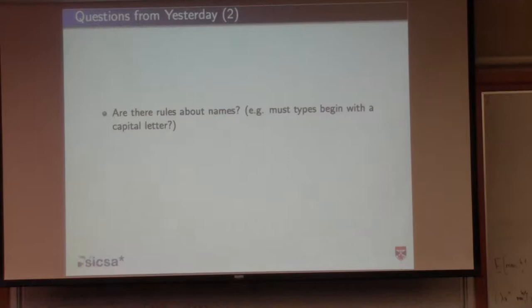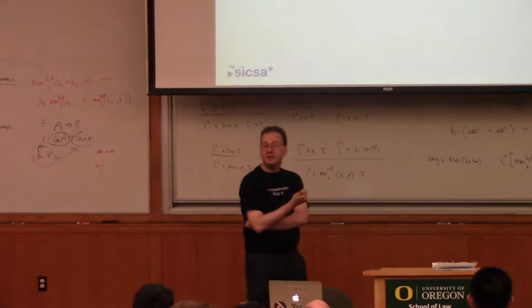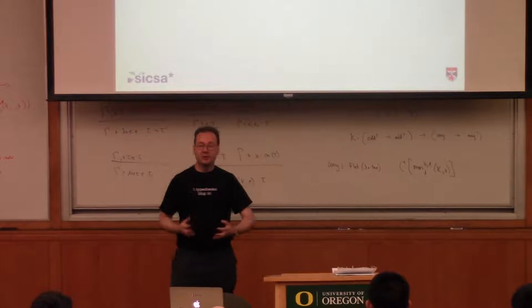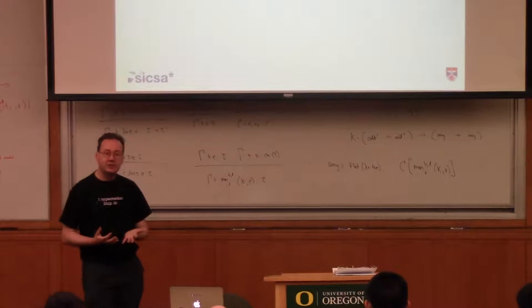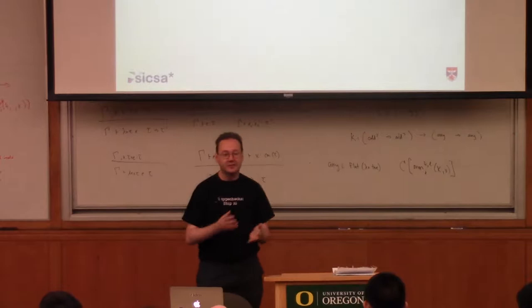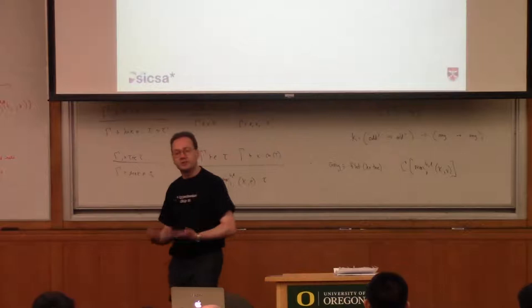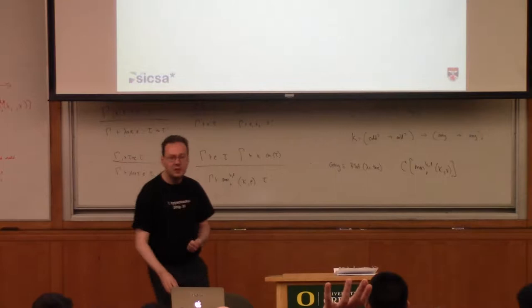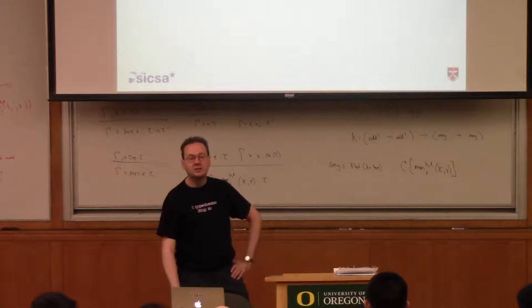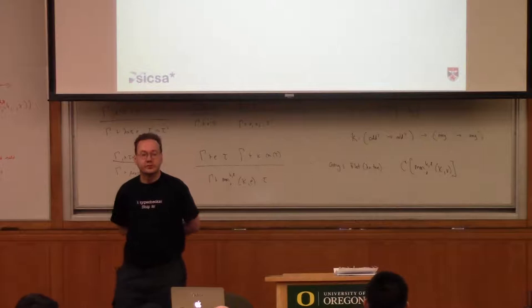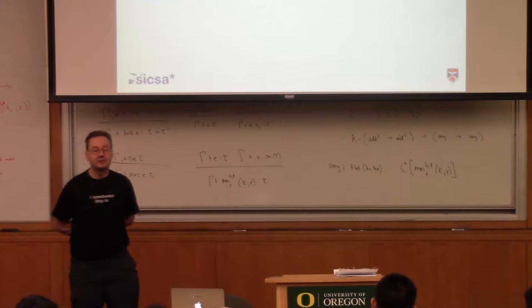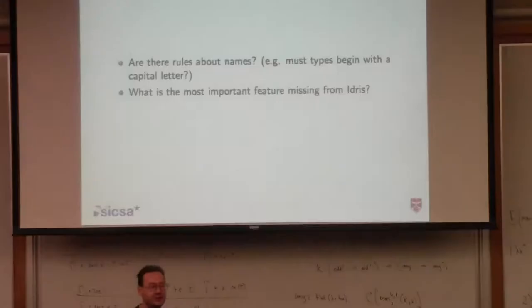Are there rules about names? If you have a name beginning with a lowercase letter in a type, that is implicitly bound — that's the only rule. Everything else is convention. I typically begin types with a capital letter because it helps with the convention: names beginning with lowercase are always implicitly bound. As a general rule, it's good convention to have lowercase names for functions or variables and uppercase for types. The same rule applies for patterns — if it begins with a lowercase letter, it's implicitly bound.